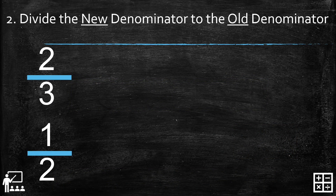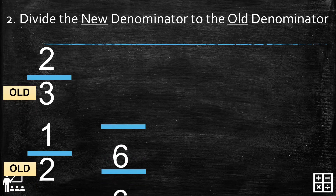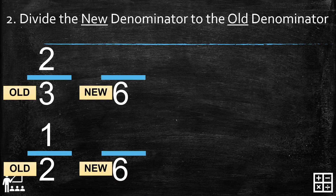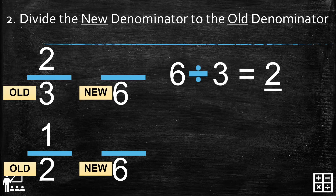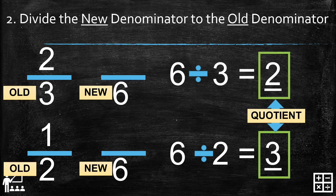Second, divide the new denominator by the old denominator. Our old denominators are 3 and 2, and our new denominator is 6. So we divide: 6 divided by 3 gives you 2, and 6 divided by 2 gives you 3. So 2 and 3 are our quotients.